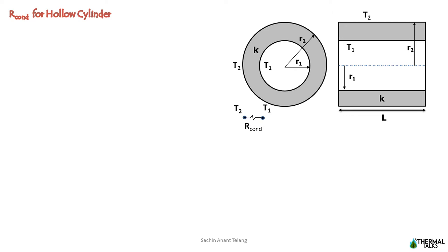Let us take a hollow cylinder of inner radius R1 and outer radius R2, having thermal conductivity K and length L. We assume that the inside surface is maintained at temperature T1 and outside surface is maintained at temperature T2.